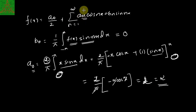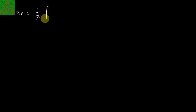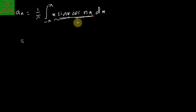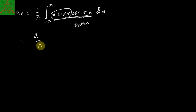Now let us calculate aₙ. We have the definition: aₙ = 1/π times the integral from −π to π of x·sin(x)·cos(nx) dx. The function x·sin(x)·cos(nx) is an even function, because x·sin(x) is even and cos(nx) is also even. So altogether it is an even function, giving 2/π times the integral from 0 to π of x·sin(x)·cos(nx) dx.